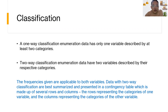The frequencies given are applicable to both variables. Data with two-way classification are best summarized and presented in a contingency table which is made up of several rows and columns — the rows representing the categories of one variable and the columns representing the categories of the other variable.